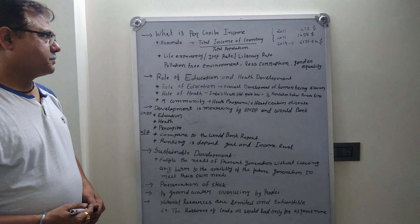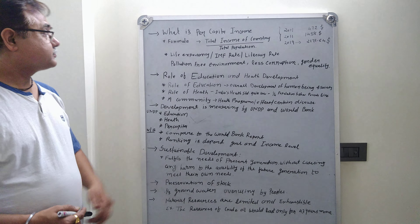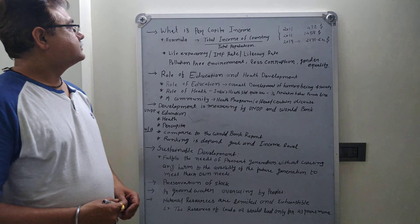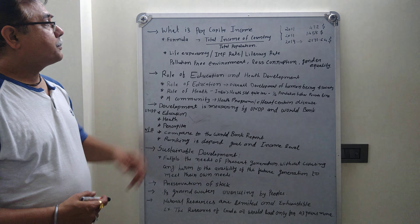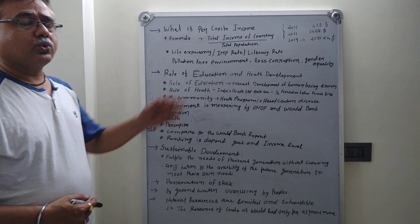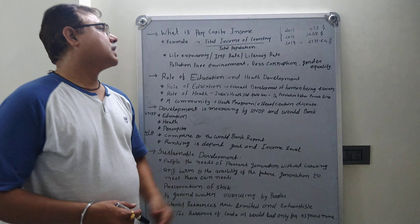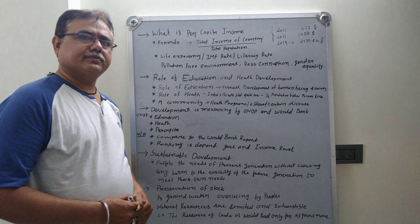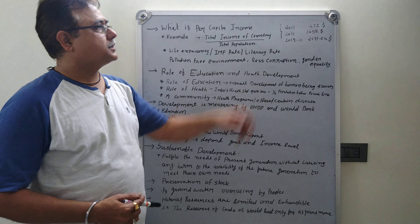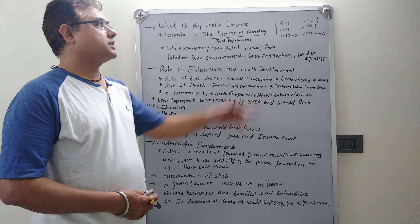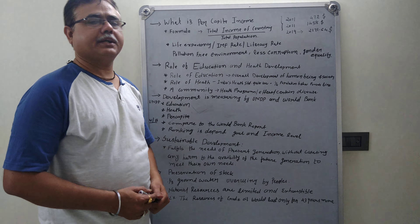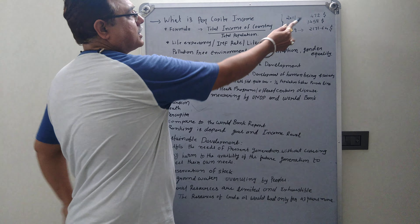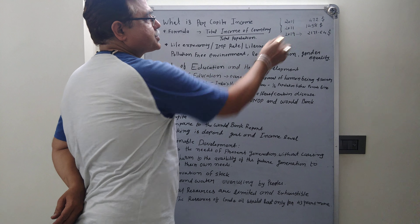Let's see part 2. What is per capita income? Per capita means the total income of the country divided by the total number of population. Here are the figures for 2001, 2011, and 2019. In 2001, the per capita income was 472 US dollars.